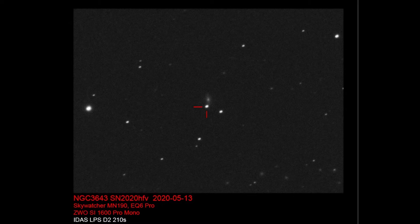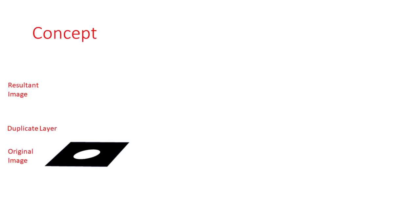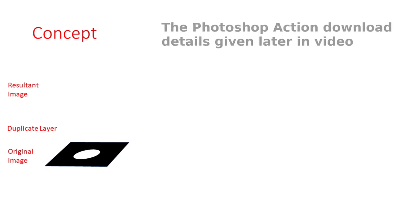I'm going to describe to you the solution I used to fix the oval stars in such a way that you can apply it to Photoshop or GIMP. But first let me take you through the concept. By understanding the concepts you'll be able to apply it appropriately to your own images.